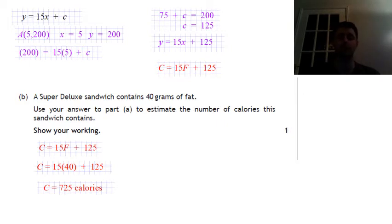We end up with 725 calories, just by doing 15 times 40, which is 600, plus 125 is 725 calories. So that's one of the standard problems that comes up in these National 5 Maths papers.